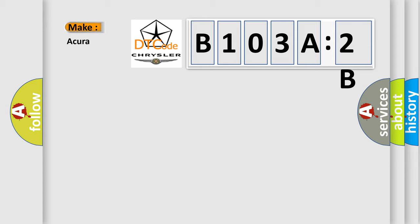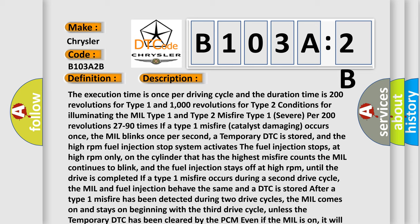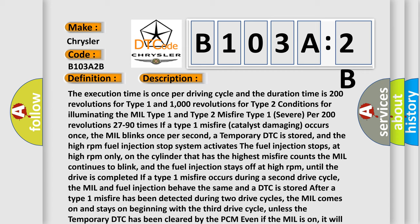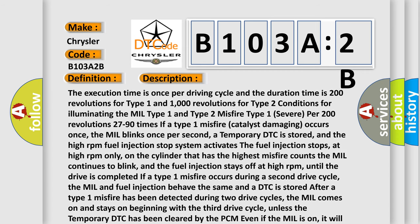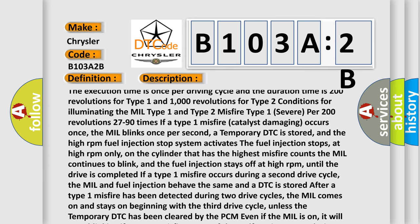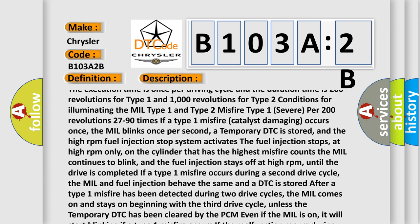DTCs P0016, P0101, P0102, P0103, P0107, P0108, P0116, P0117, P0118, P0120, P0121, P0122, P0123, P0128, P0220, P0222, P0223, P0335, P0336, P1516, P2101, P2119, P2120, P2122, P2123, P2125, P2135, or P2138 are not set.